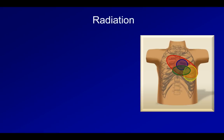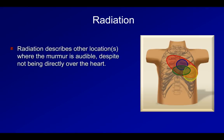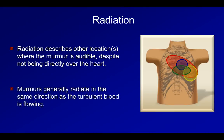The radiation of a murmur can be a difficult effect to clearly describe in words. It's most often described as the location where a murmur seems to travel to — or the location where a murmur is audible despite the stethoscope not being directly over the heart. Murmurs generally radiate in the same direction as the turbulent blood is flowing. For example, a murmur from aortic stenosis might radiate into the carotid arteries, a murmur from tricuspid regurgitation can radiate to the anterior right thorax, and a murmur from mitral regurgitation can radiate to the axilla.